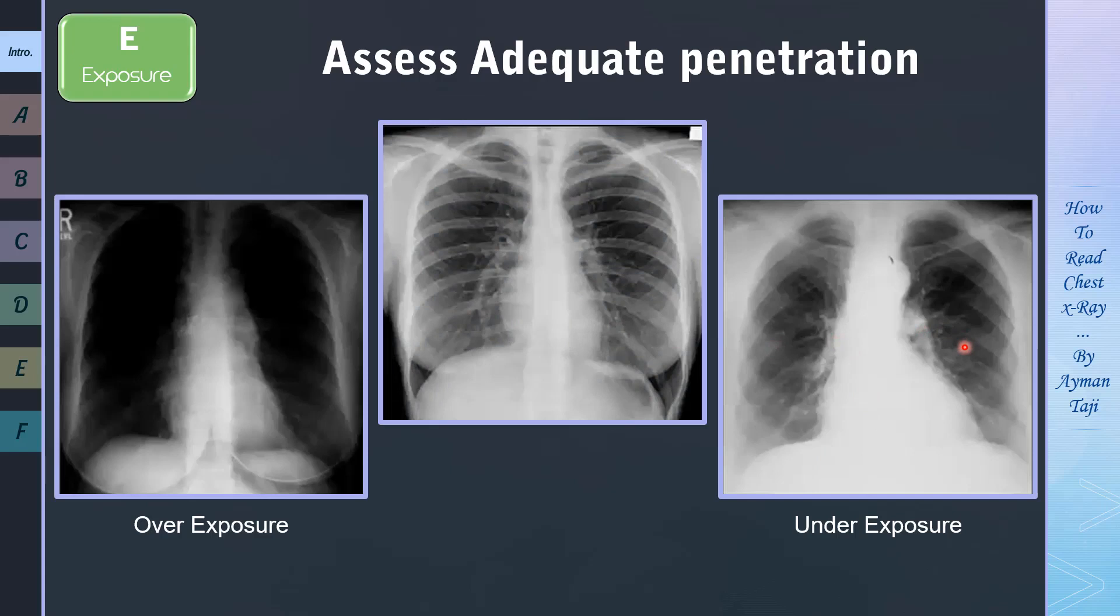And this is what a CXR with optimal exposure would be. In which you can see the left hemidiaphragm is visible to the spine, and vertebrae are visible behind the heart, while here, you can't. You can also see pulmonary vessels, while in overexposed image, you can't.